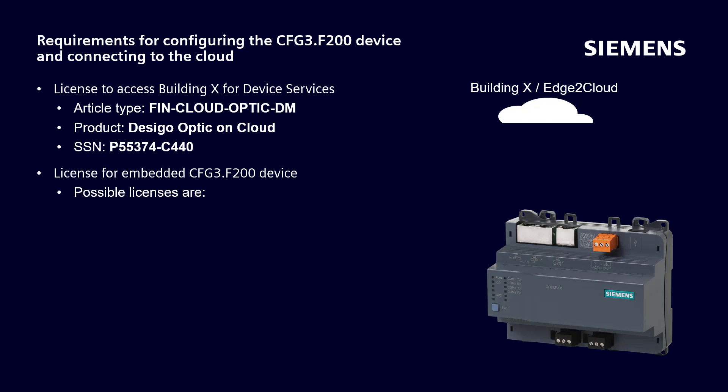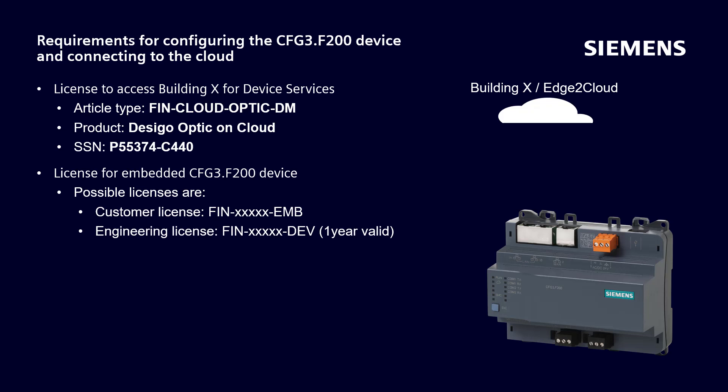The possible licenses are: a customer license shown here, an engineering license shown here which is valid for one year, or Siemens provides a training license valid for one month, free of charge, which can be downloaded from a share folder every month.